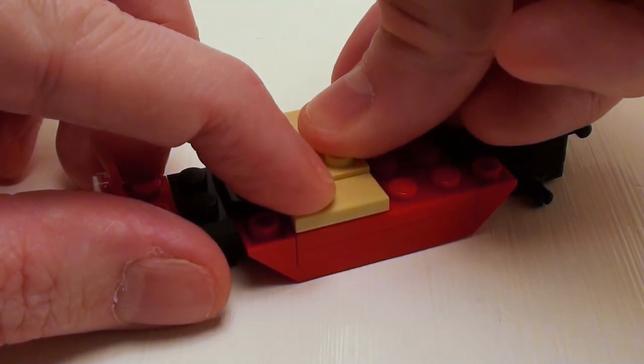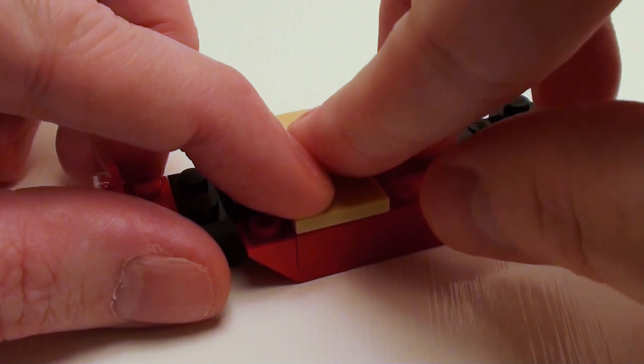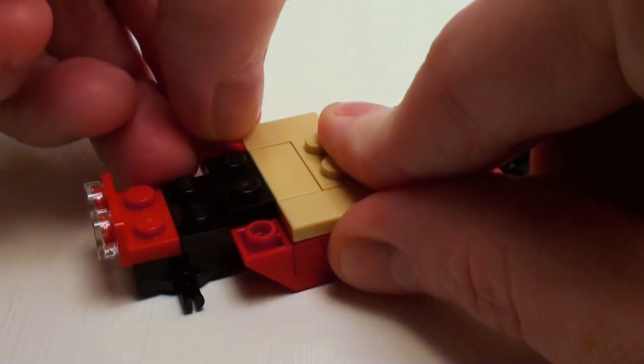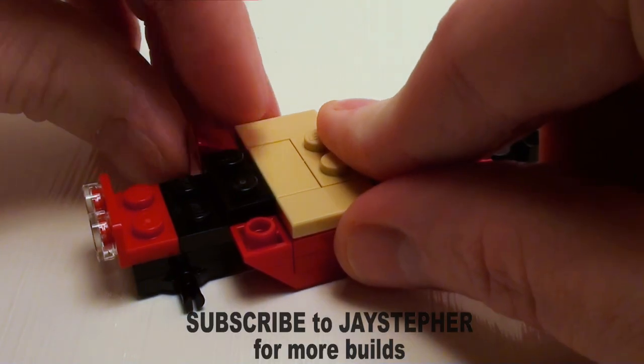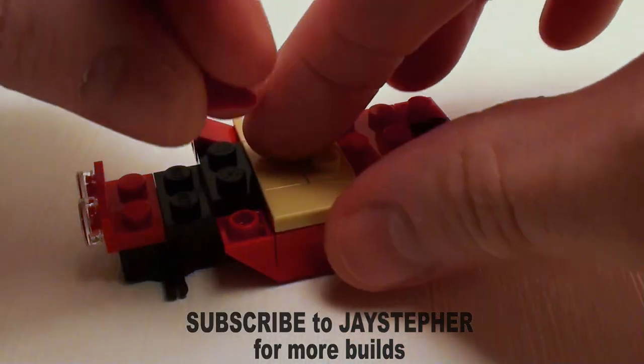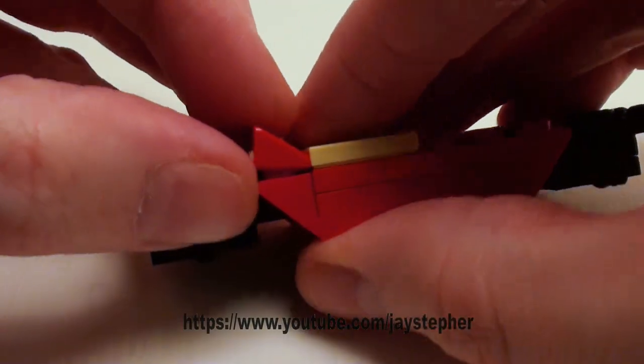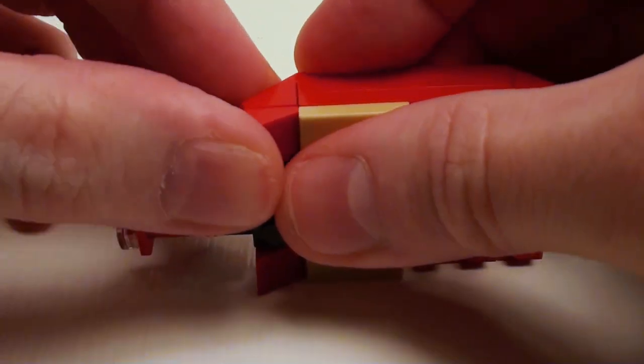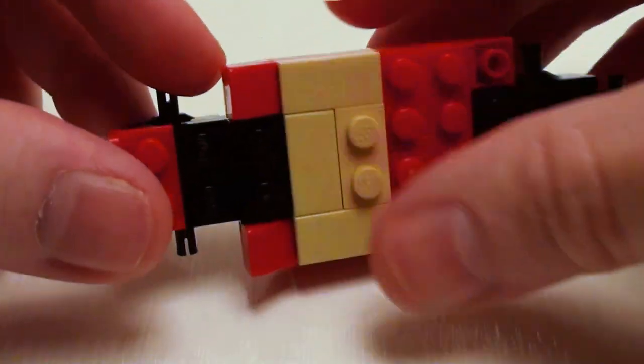And a 1 by 2 plate in this area so we can anchor down our minifigure to the seat and place a pair of 1 by 1 by 2 thirds slopes. May have to hold on the bottom a bit because the bearing plates do protrude out.